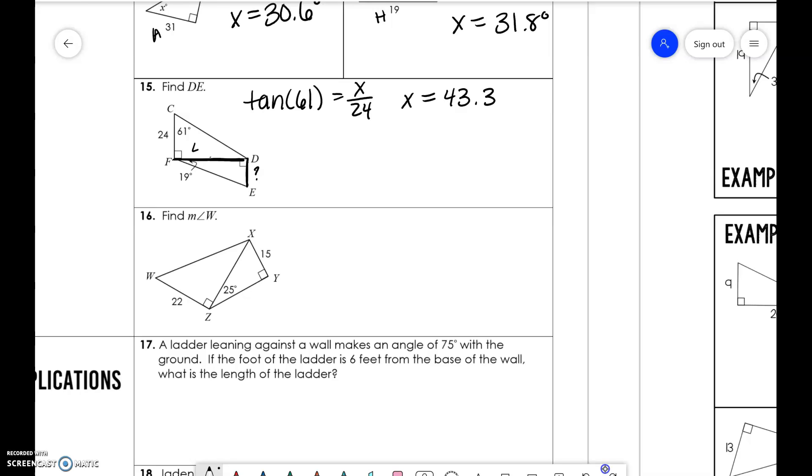So now that we know that, we can use this triangle on the bottom. I'm going to name it Y. So that means we have opposite and adjacent. So again, we're going to do tangent of 19 degrees is equal to Y over 43.3 to get Y is equal to 14.9.